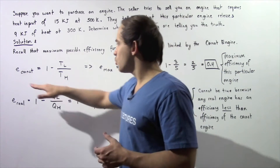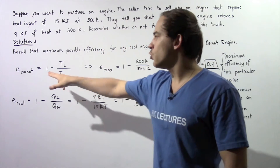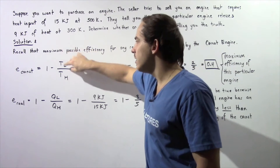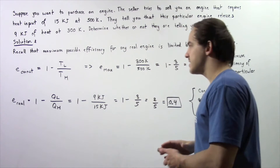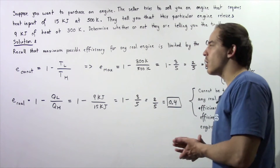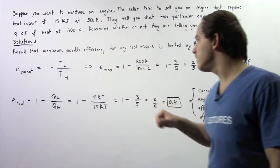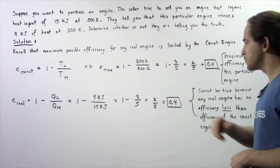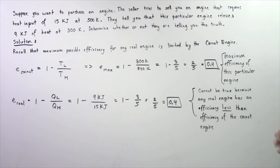In the previous lecture, we derived the following equation: the efficiency of any Carnot engine is equal to 1 minus the temperature TL divided by the temperature TH — the lower temperature divided by the higher temperature. This efficiency is the maximum efficiency of our heat engine, and that is equal to 1 minus 300 kelvins divided by 500 kelvins, which is 1 minus 3/5, or 2/5, equal to 0.4. So 0.4 is the maximum efficiency of this particular engine.